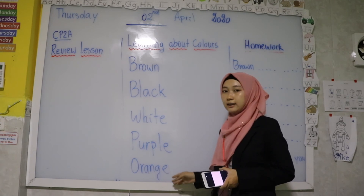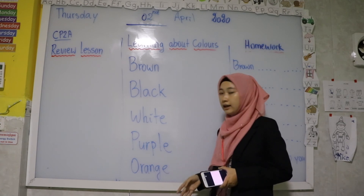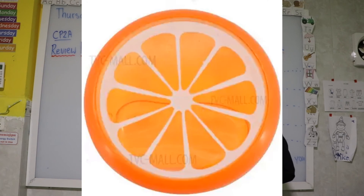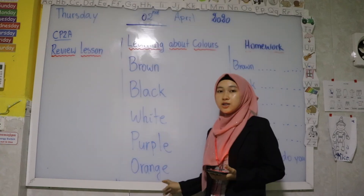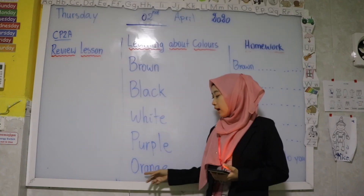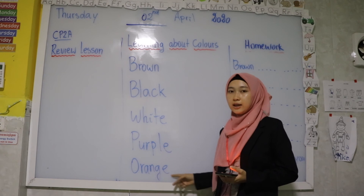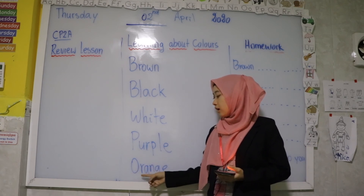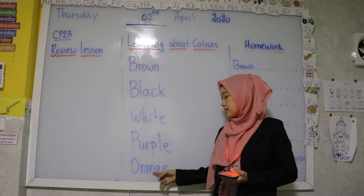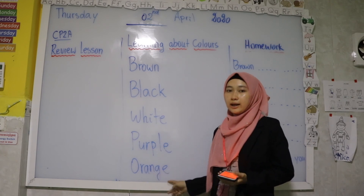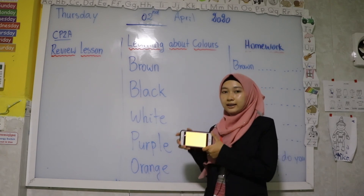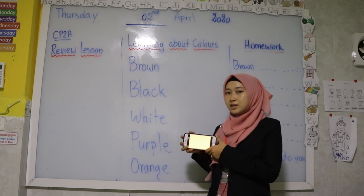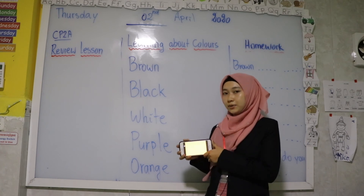The last color for today is orange. Orange is spelled O-L-A-N-G-E — O-R-A-N-G-E. Orange. This is orange color. Do you love orange? I love orange fruit.